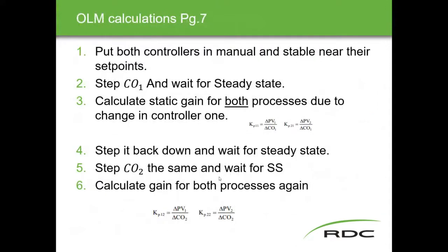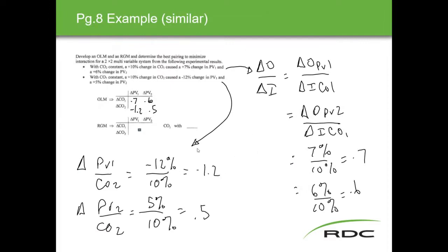Here's an example. Let's say we had a question: develop the open loop matrix and a relative gain matrix, determine the best pairing to minimize interaction for a two-by-two multi-variable system from the following experimental results. From the test: a 10% change in controller one caused a 7% change in PV1 and a 6% change in PV2. Then a 10% change in controller two caused a negative 12% change in one PV and a positive 5% change in the other.